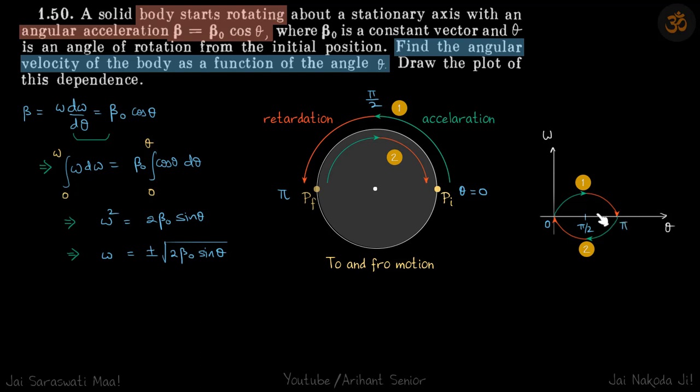So theta never crosses pi. Theta goes from 0 to pi and then it comes back from pi and goes back to 0. So that's why this term inside the root is always positive. So when it comes back, then again it accelerates. So it will be like this, but the omega is negative. So that's why it will go down. And then it will decelerate and become 0 again at the initial position.